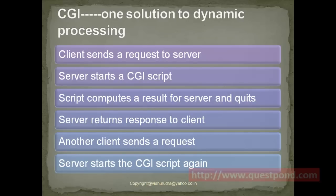To achieve dynamic processing, one possible solution was by using CGI scripts, which were Common Gateway Interface scripts. In the case of CGI, the client sends a request to the server. The server starts a CGI script based upon the request. The script computes a result and after computing the result it quits. The server then sends the computed response back to the client. This forms one request-response cycle.